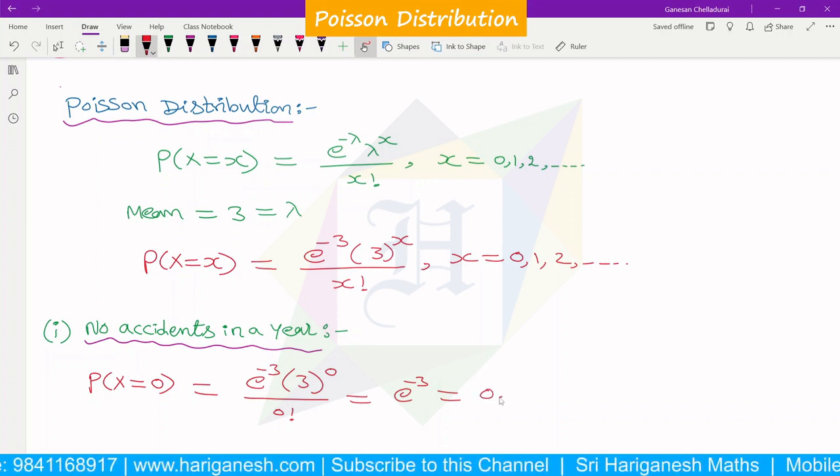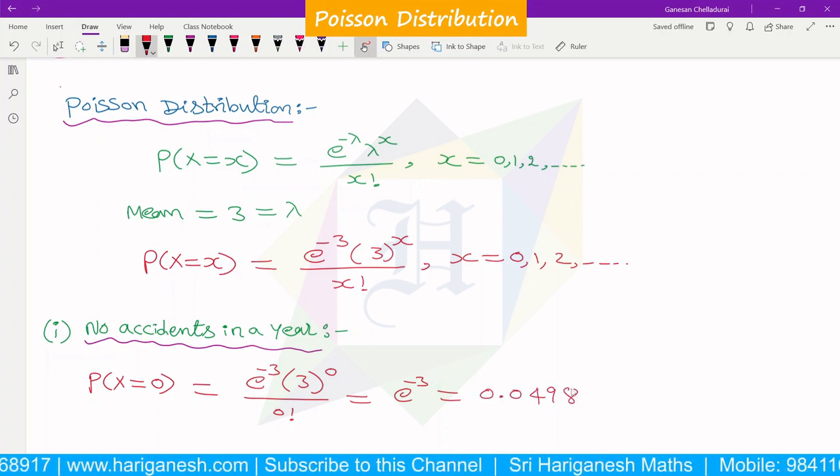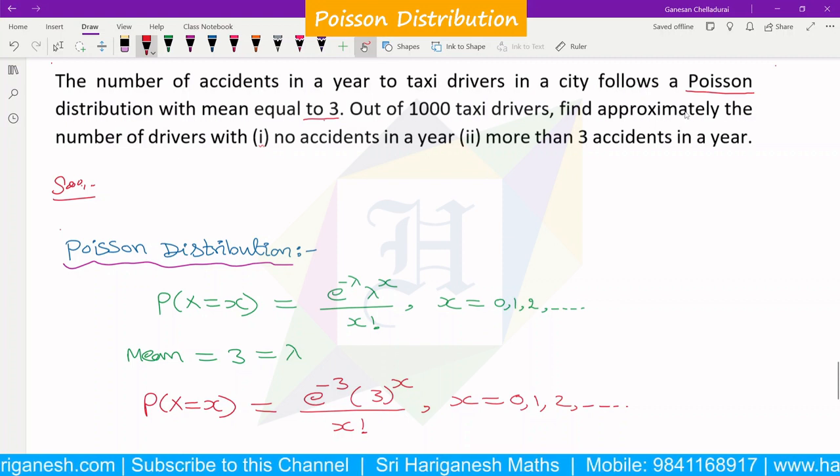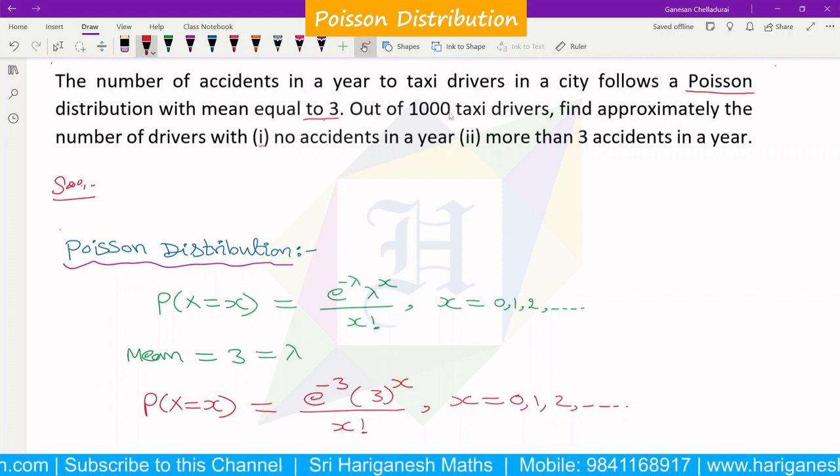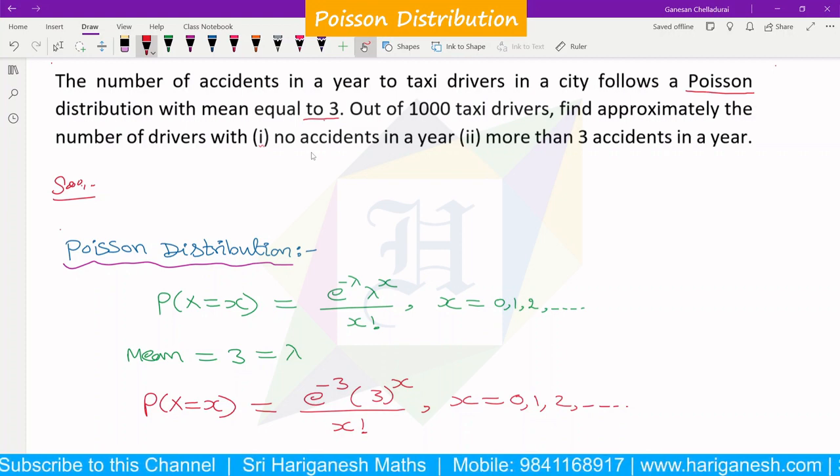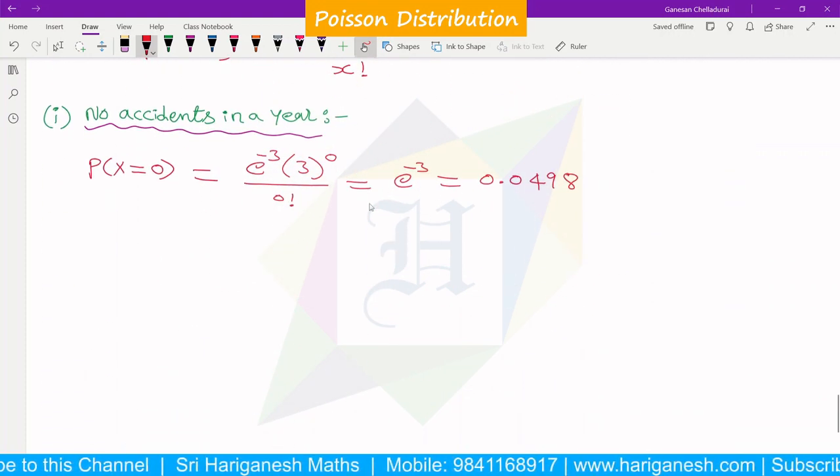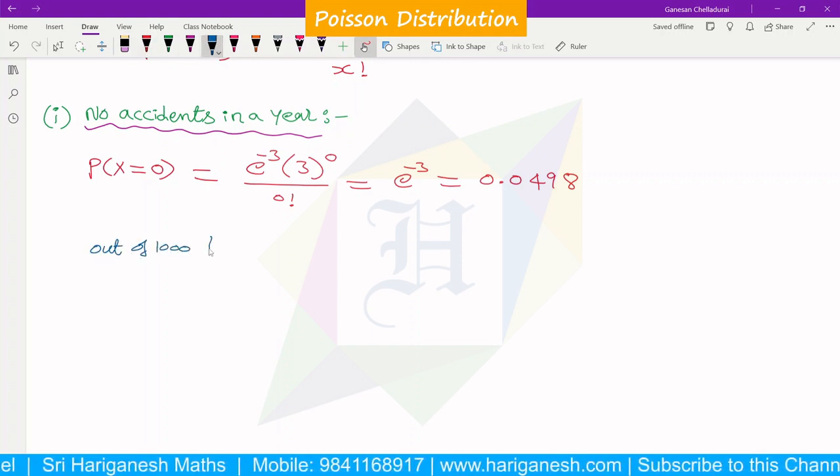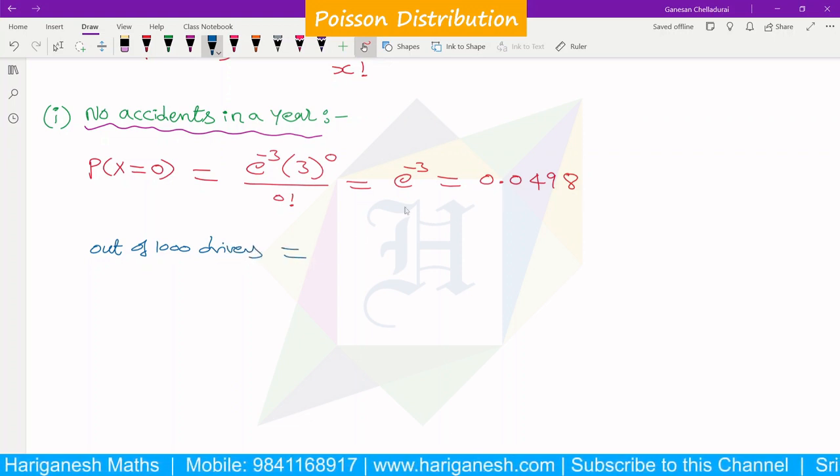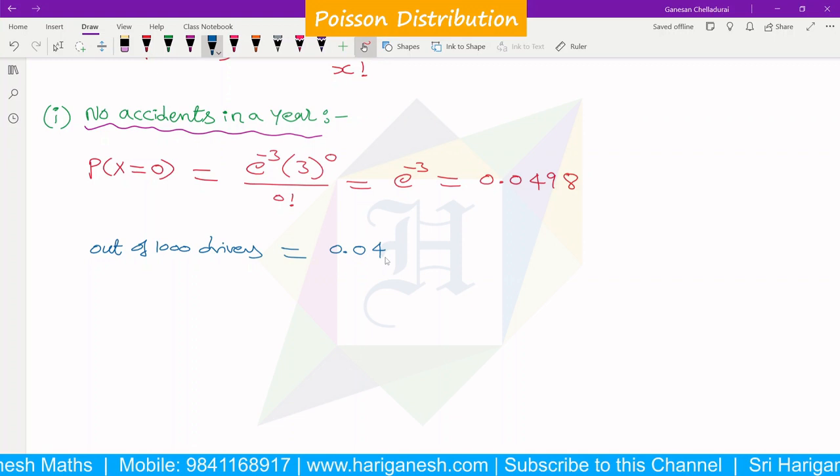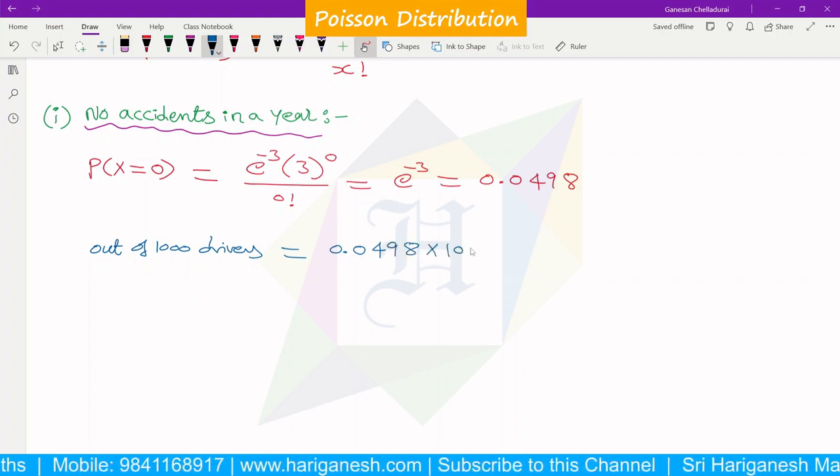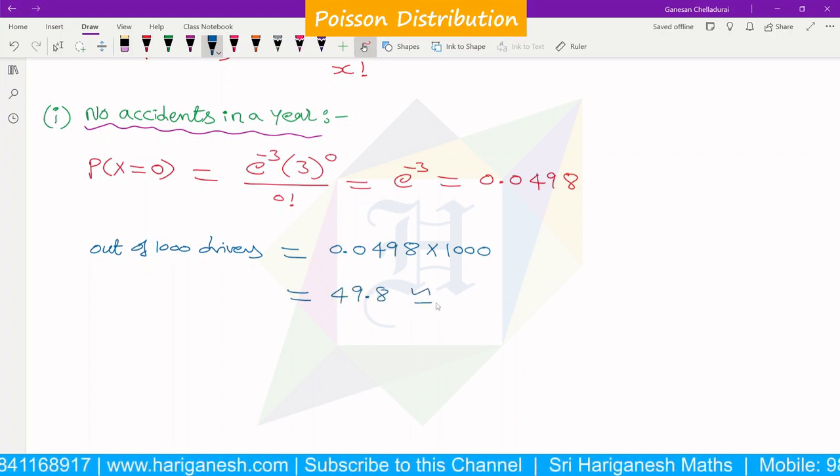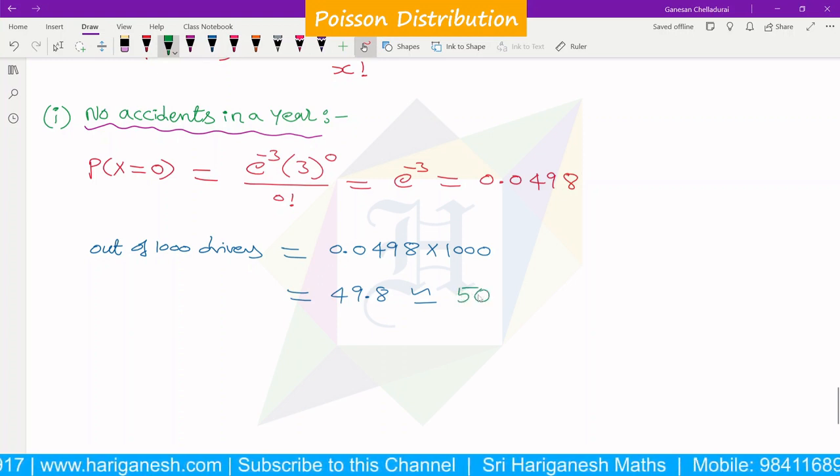The number of drivers - it's a probability value. So x=0. Out of 1000 drivers, no accidents in a year, so out of 1000 drivers, approximately 50 drivers have no accidents.